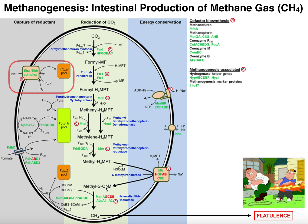This methyl-S-CoM is now going to be reduced further, meaning the methyl group is going to pick up an extra hydrogen and become methane. This is catalyzed by an enzyme called heterodisulfide reductase, and this is where we have Co-B. Co-B, or coenzyme B, is also a thiol. The thiol of Co-B is going to attack the sulfur on Co-M, forming a heterodisulfide bond between Co-B and Co-M. That's going to kick off the methyl group as the leaving group, and it picks up a proton from solution to become methane.